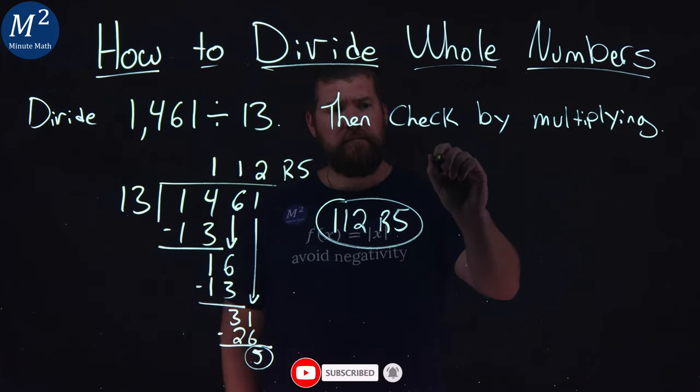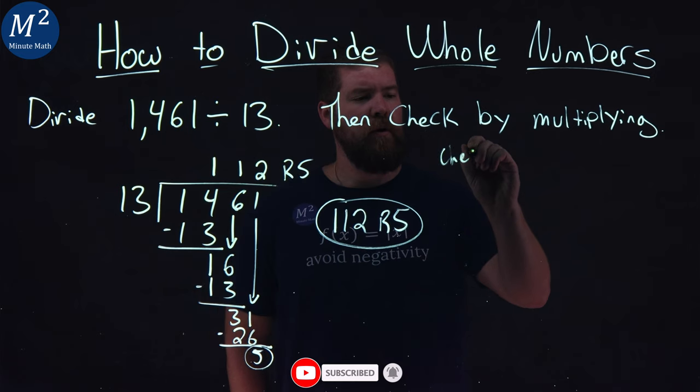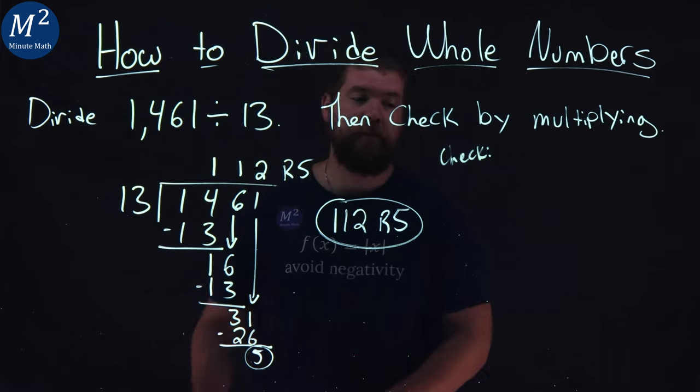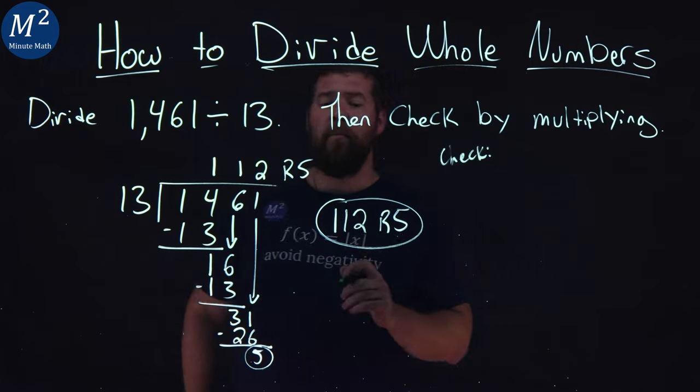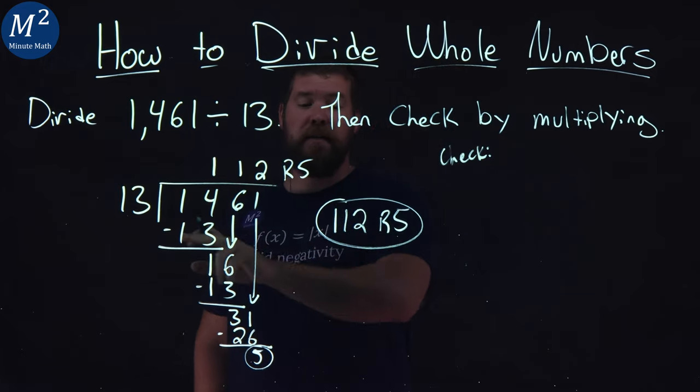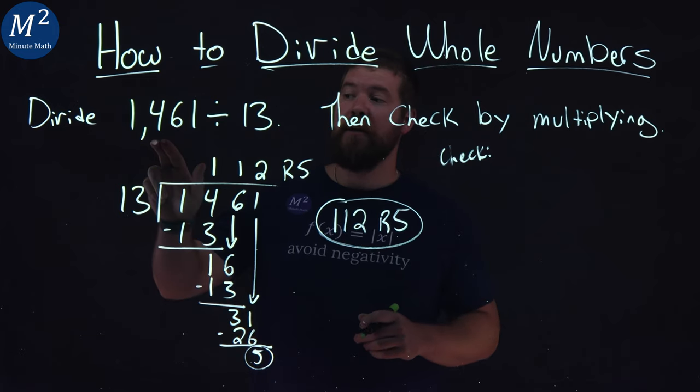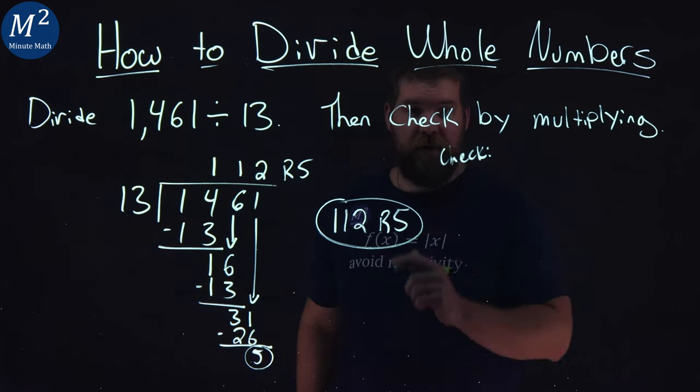Then I check our work. If my marker allows me to. Let's go switch and I'll try to power through that one. We're going to check here. What we should have is we're going to take 13, multiply 112 to that, and if we add 5 to that number, we should get 1,461 if we did our work right.